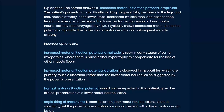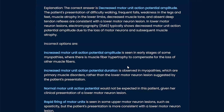And increased motor unit action potential amplitude — tongue twisters aside — is seen in early stages of myopathy where there's muscle fiber hypertrophy to compensate for the loss of other muscle fibers. Good things to know. Obviously this question is a little more difficult, but those are the key distinctions.